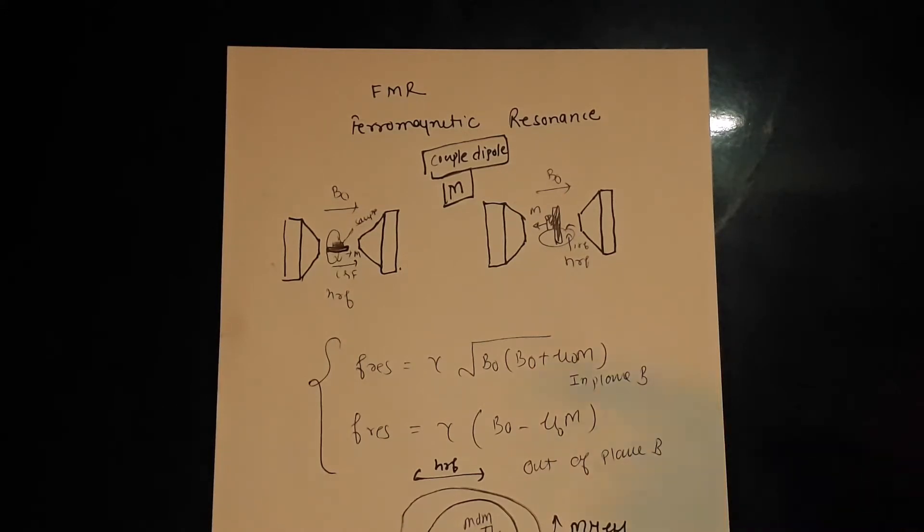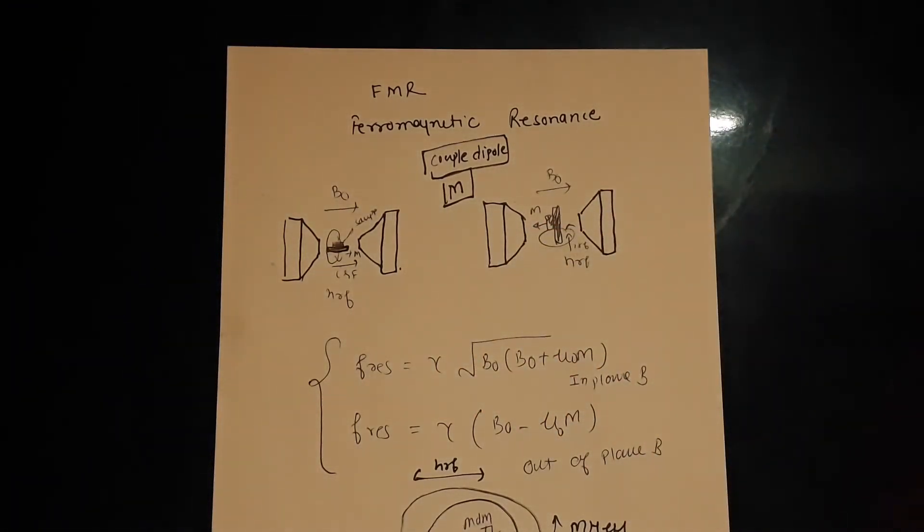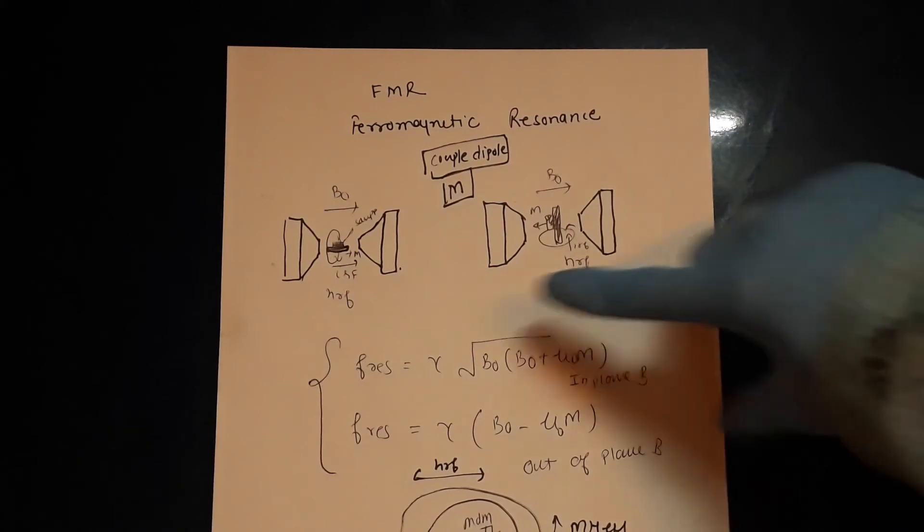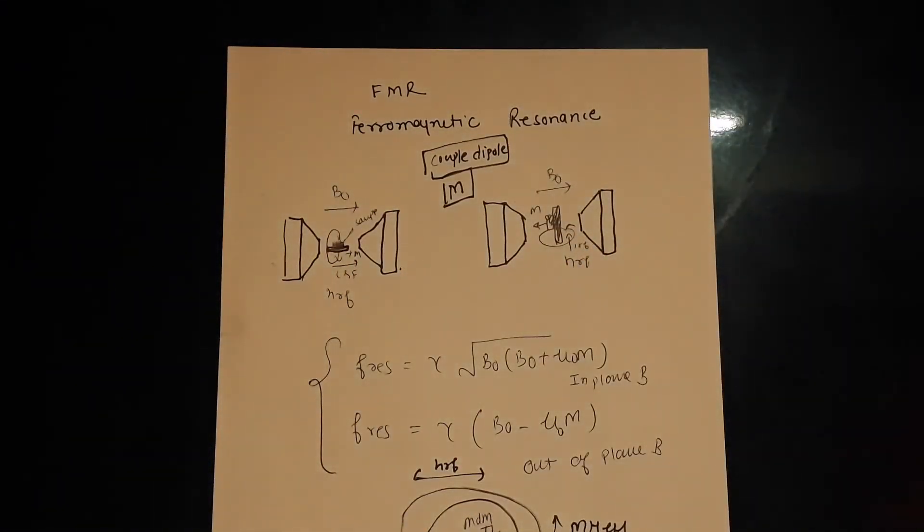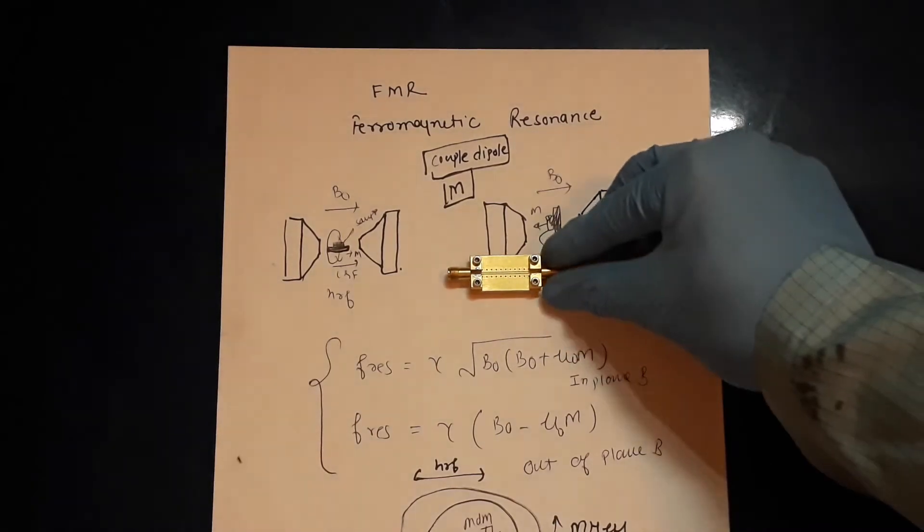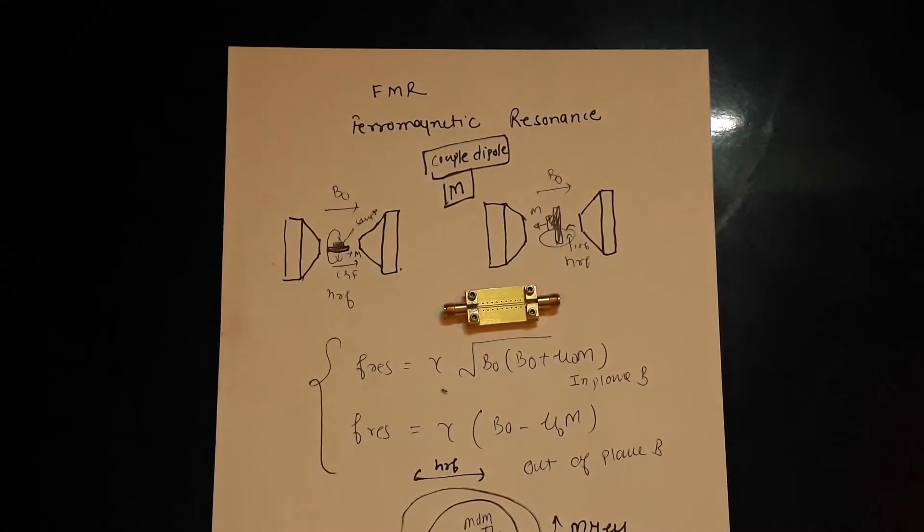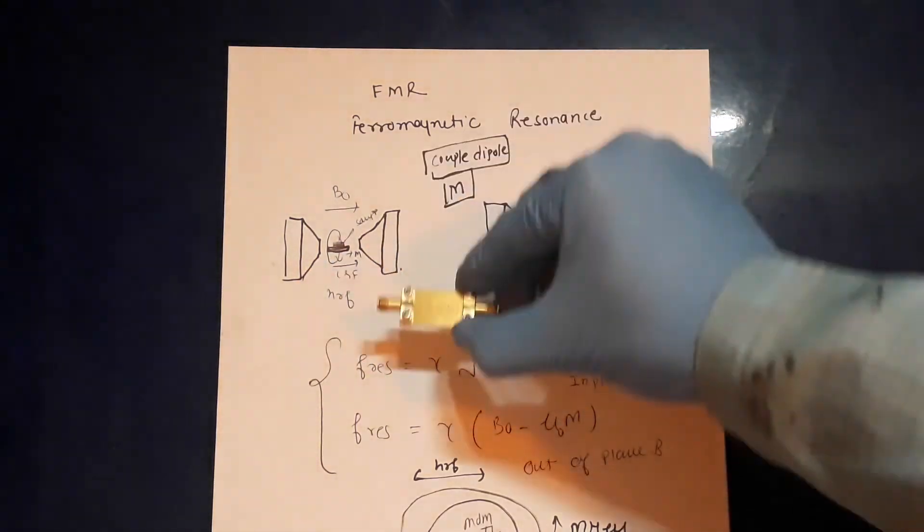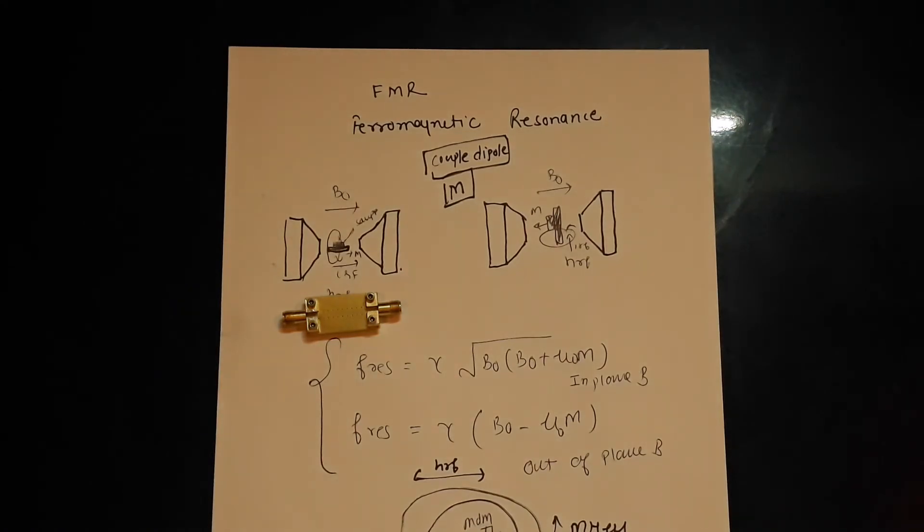What I have drawn here are two configurations showing how we can measure this. The magnetic field is going in this direction. You make a CPW which is called coplanar waveguide and you put your sample upside down, called flip chip geometry. In this configuration the current is passing through this direction, so it's called in-plane geometry.